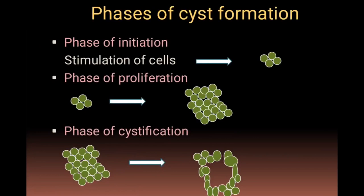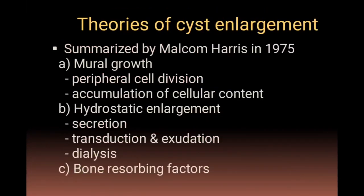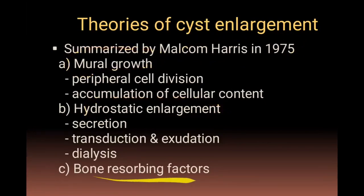A cyst develops when stimulation leads to proliferation and multiplication of cells, with arrangement creating a lumen inside, resulting in peripherally arranged cells with a central lumen. Theories of cyst enlargement, summarized by Malcolm Harris in 1975, focus on three concepts: mural growth, hydrostatic enlargement, and bone resorbing factors. Mural growth involves peripheral proliferation and accumulation of cellular content; hydrostatic enlargement involves secretion, transudation, and exudation; bone resorbing factors involve osteoclastic activity.